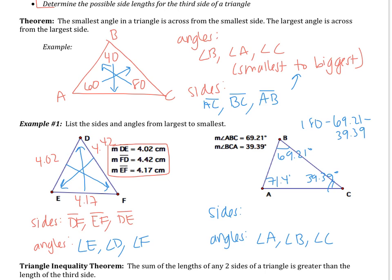Now we can do the sides. If angle A is the biggest, then BC will be the biggest side. If angle B is the medium, then across from that, AC is the medium side. If angle C is the smallest angle, then AB will be the smallest side. Make sure you find that third angle — if you don't, you will not receive full credit.